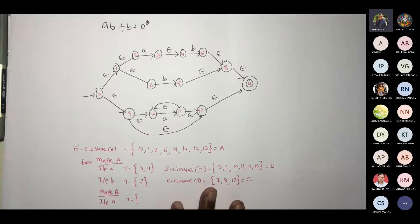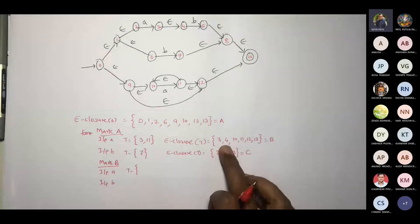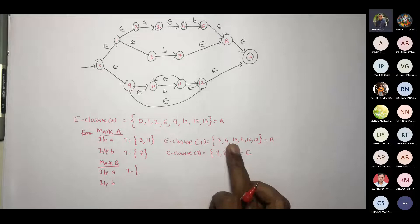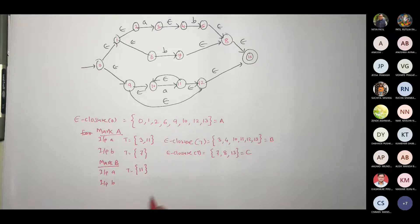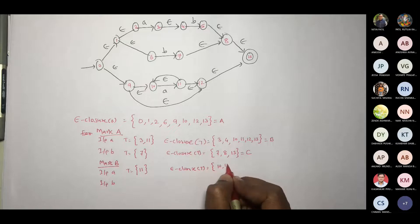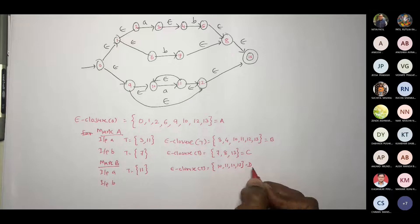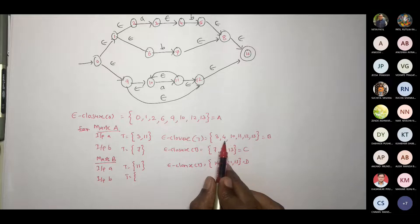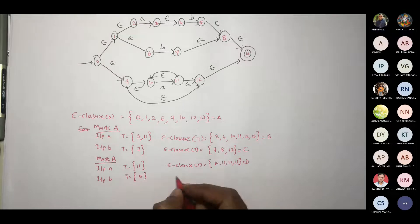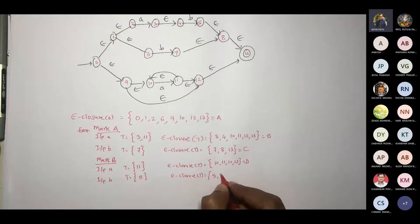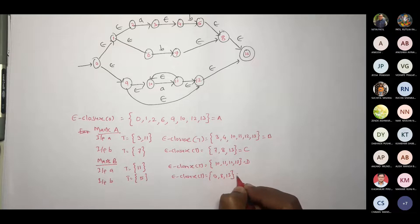The regular expression that we are working with is AB plus B plus A star. So mark B. As 3 and 4 are involved, 2 cannot be taken. 10 is involved. T for B: we have 4, so that's why 5. So 5, 8 and 13. Correct. So this would be state C.